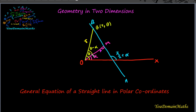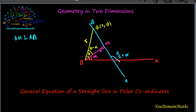Let us consider the perpendicular distance from origin or pole O to the straight line AB, that means OM perpendicular to AB, and the length of OM equal to p. Also let alpha be the angle between OM and OX, that is angle MOX equal to alpha.